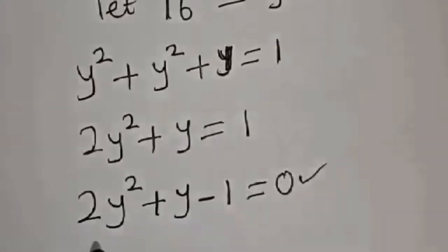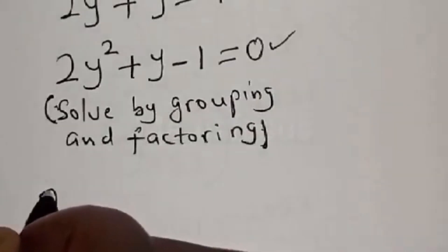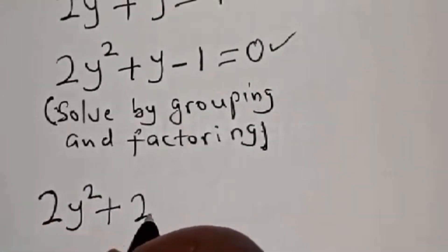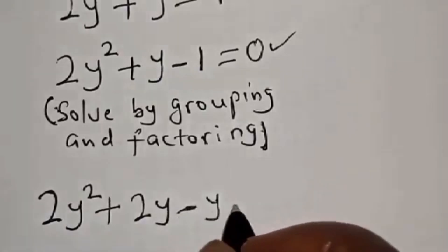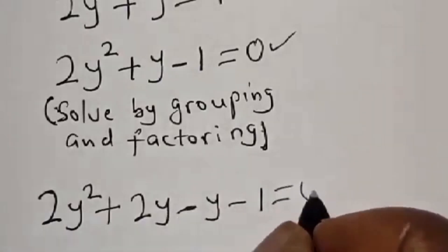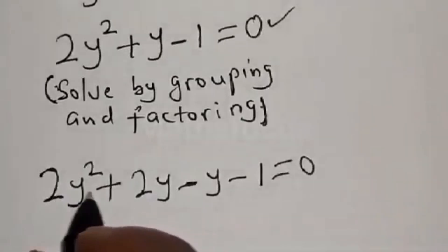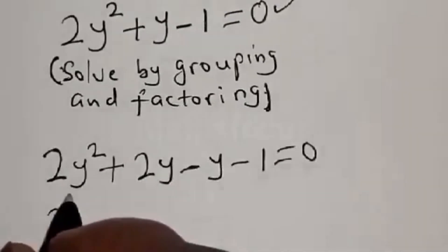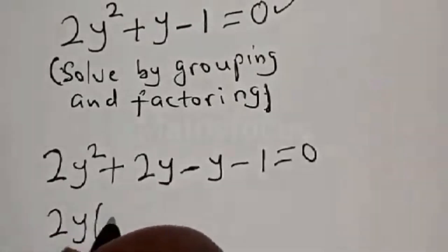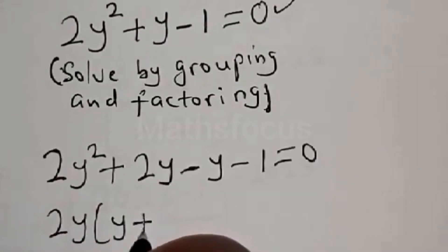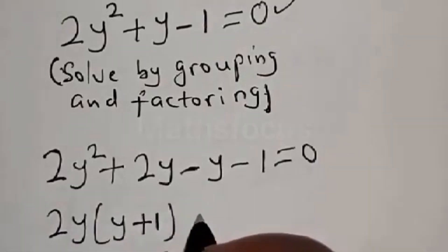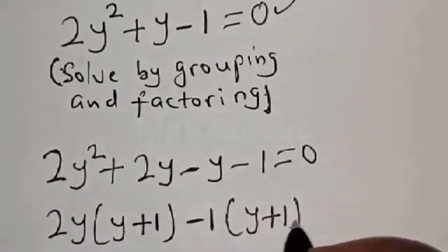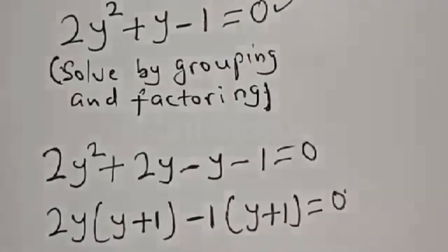Let's solve this by grouping and factoring. We have 2y squared plus 2y minus y minus 1 is equal to 0. Here 2y squared and 2y have 2y common, and y is common in the remaining terms.